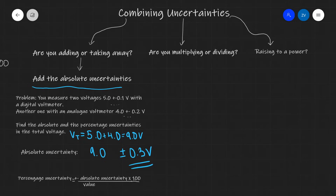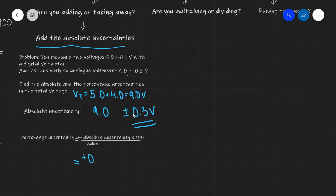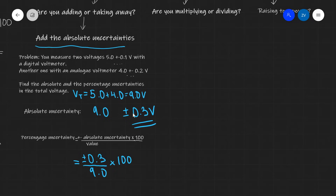We can also find the percentage uncertainty, of course, simply by using the formula that percentage uncertainty is plus or minus the absolute uncertainty times 100 divided by the value. In this case, our absolute uncertainty is plus or minus 0.3. We're going to divide this by our value for the total voltage, which is 9.0, multiply by 100, and that's going to give us about 3.3 percent.